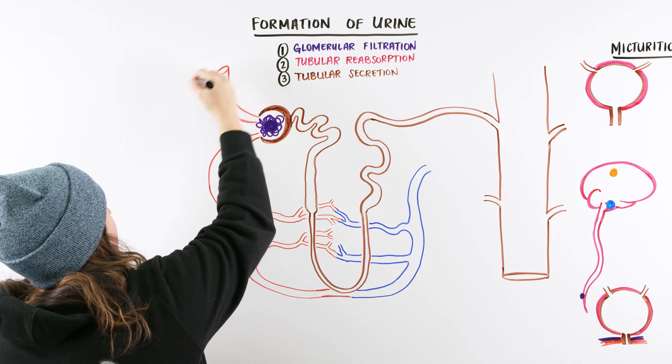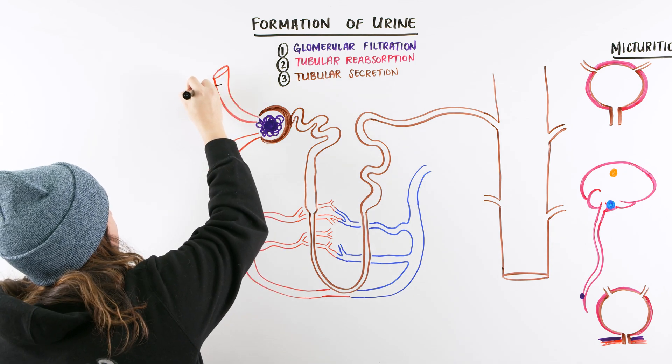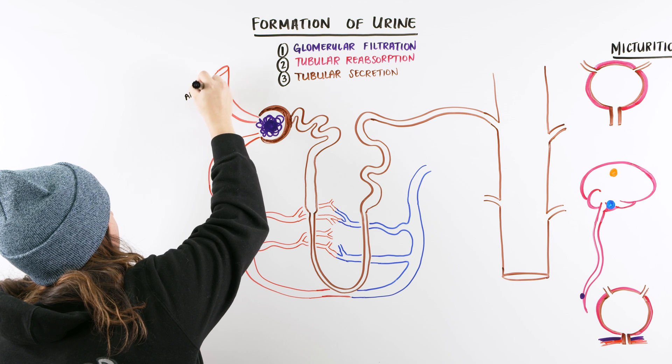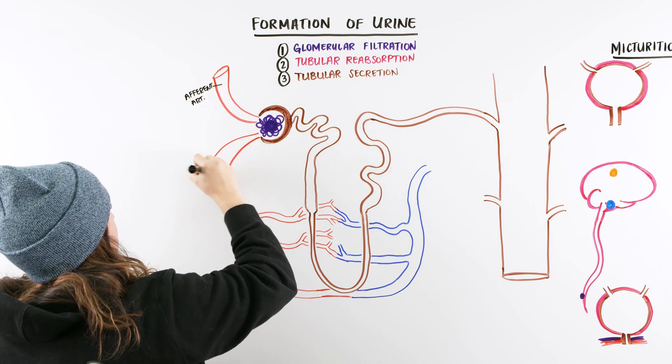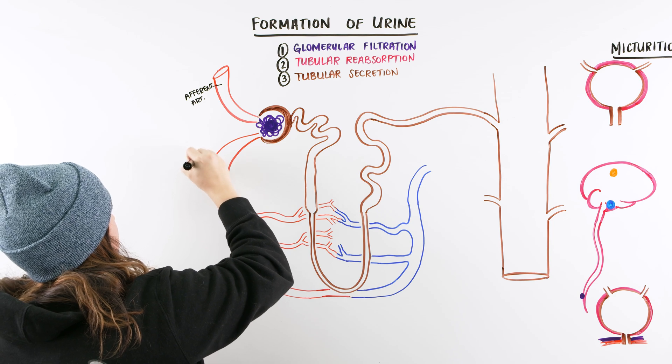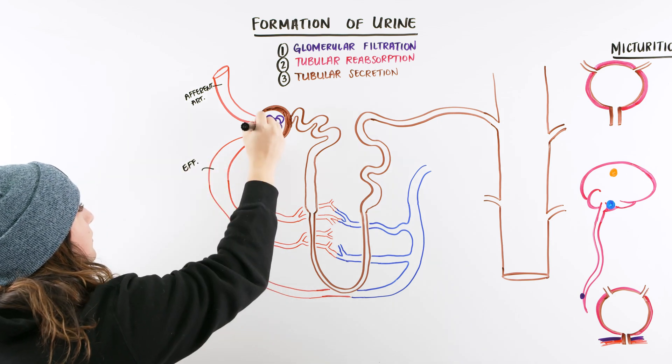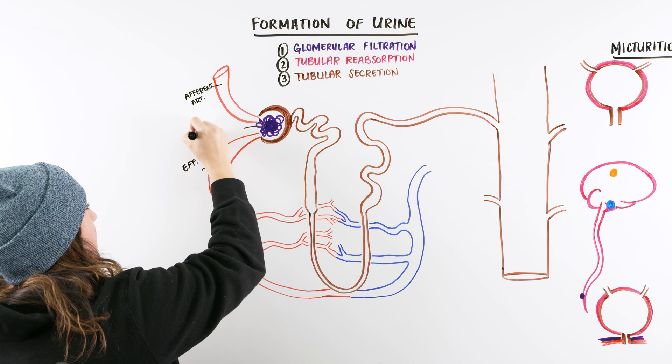But real quickly, we have here our afferent arterial, and our efferent. Then we also have our glomerulus, right? And that's where we have this little capillary bed.